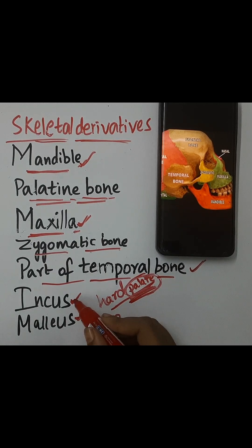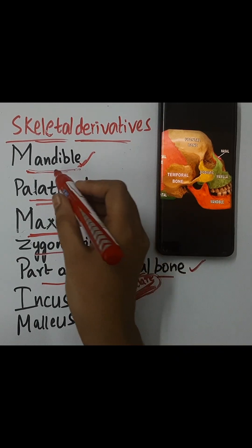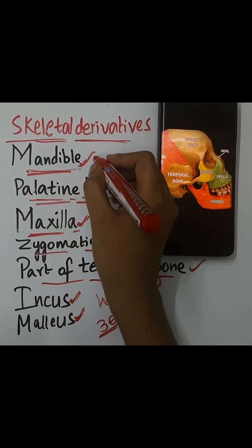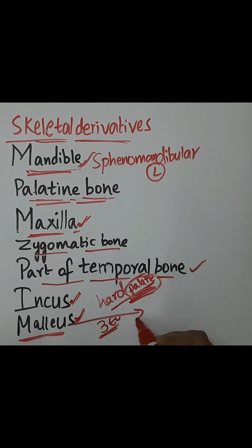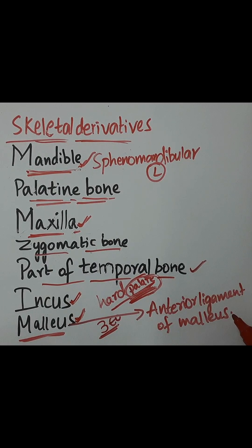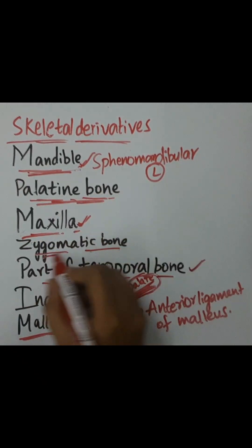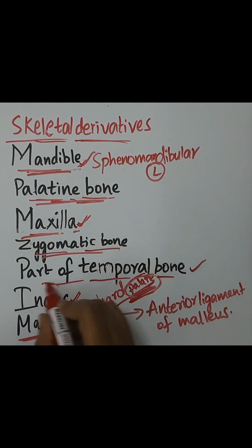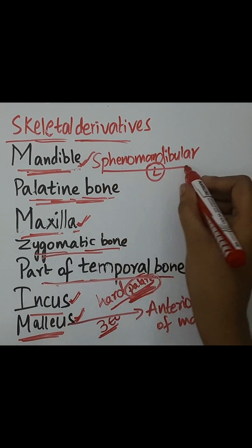There are also 2 ligaments derived from the 1st pharyngeal arch: the sphenomandibular ligament, related to the mandible, and the anterior ligament of malleus. So the full skeletal derivatives are: mandible, maxilla, palatine bone, zygomatic bone, a part of temporal bone, incus, malleus, sphenomandibular ligament, and anterior ligament of malleus.